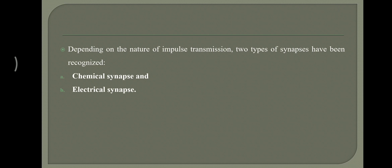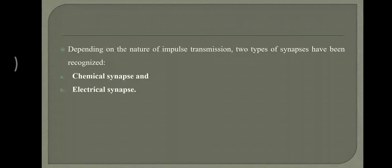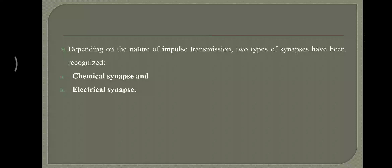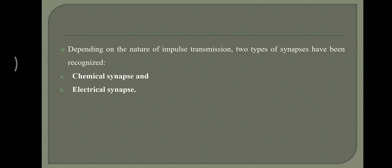Depending on the nature of impulse transmission, two types of synapses have been recognized: chemical synapses and electrical synapses. In a chemical synapse, a chemical is needed for the transmission of impulse from one neuron to another.